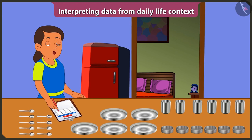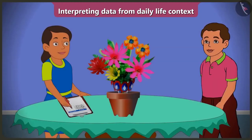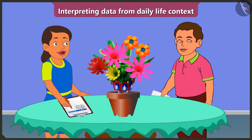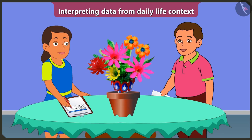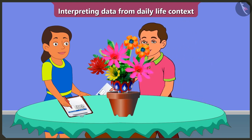Now let's see the second example. I will fill this table by counting how many and which color plastic flowers are there in this flower vase. Pink flowers — one, two. Hey Bubbly, you don't need to count these flowers. Look, I have filled the data about the flowers which are in the flower vase.